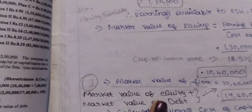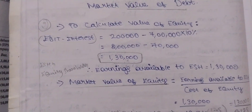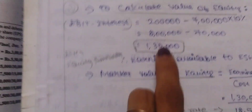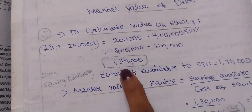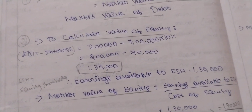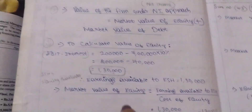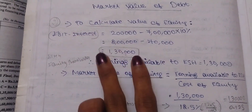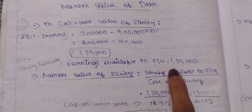Market value of equity equals EBIT minus interest, divided by cost of equity. EBIT is 2 lakh minus interest: 7 lakh at 10% equals 70,000. So earnings available to equity shareholders is 2,00,000 minus 70,000 equals 1,30,000. Divided by cost of equity 12.5%.